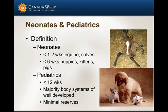When I refer to a neonate, I'm referring to a puppy or kitten under six weeks of age. If I were speaking of horses, I would be speaking of an animal under one to two weeks of age. This is what I would truly define as the neonate, and neonates are obviously the most immature patients that we might anesthetize. The majority of patients we're going to anesthetize are what we consider pediatrics.